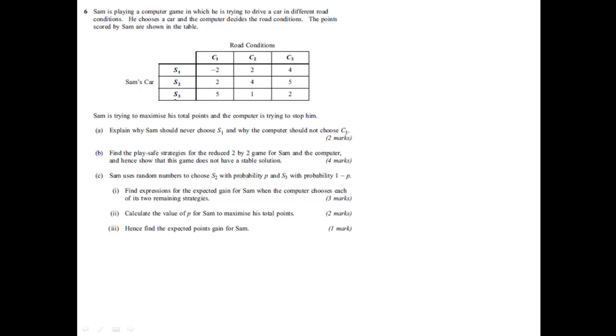So Sam chooses a strategy, chooses a particular car in fact, and the computer will choose what the given road conditions are. Here we have the payoffs. So if Sam was to, for instance, choose car 3, strategy 3 here, and the computer was to choose strategy 1, then Sam would gain 5.